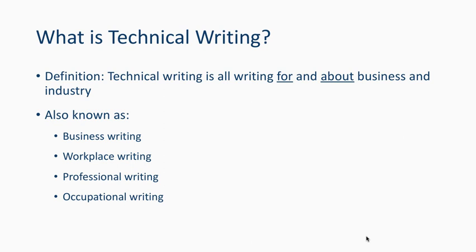Some people find it easier to think about what isn't technical writing, since it's more often easier to identify academic writing — things done for school purposes — or creative writing — things written primarily for entertainment and personal use.